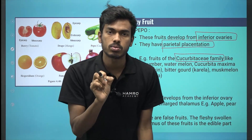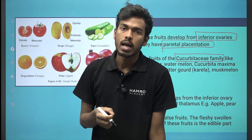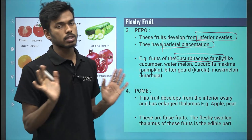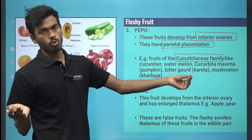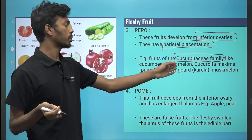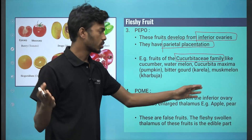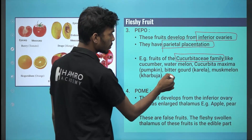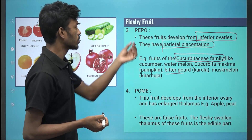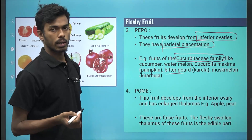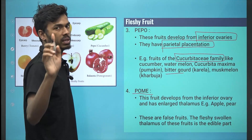What is the placentation? In the cucurbitaceae family, examples include cucumber and pumpkin. What is the fruit of the cucurbitaceae family? Pepo. Just one example. What is the pome?